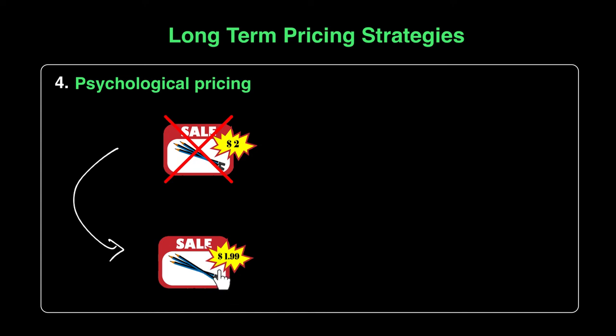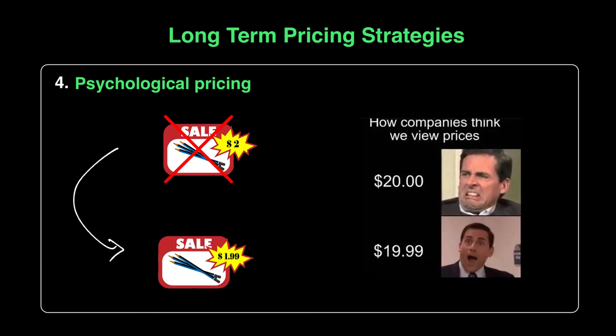And that's all they'd change about it, and people think wow, it sounds like a good deal. That's what companies are banking on to get people to think the price is just right. The great Michael Scott from The Office explains this perfectly — how companies think we view prices: for $20 we hesitate, but for $19.99, that's just what we want. That's basically what psychological pricing is all about.